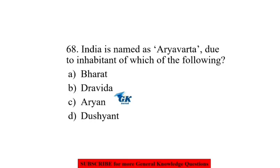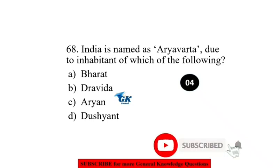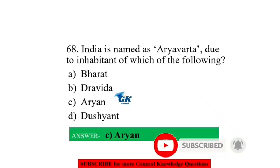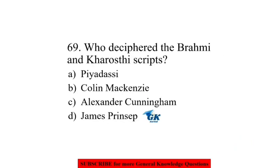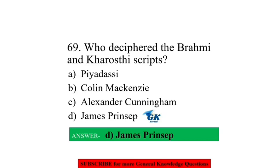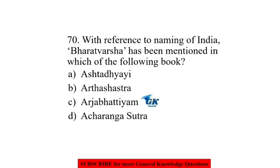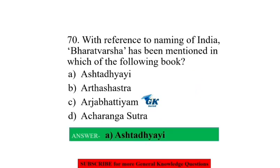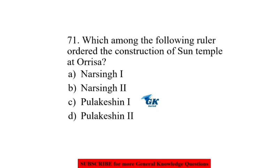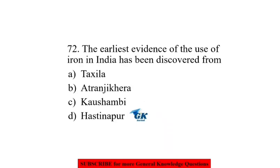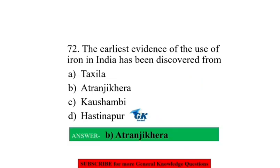India is named Arya Vrata due to the inhabitants of which group? Aryans. Who deciphered the Brahmi and Kharoshti scripts? James Princep. Bharat Varsha has been mentioned in the Vishnu Purana. The earliest evidence of the use of iron in India has been discovered from Atranji Khera.